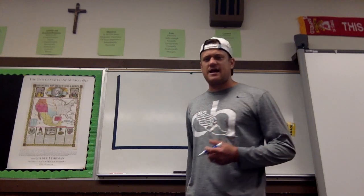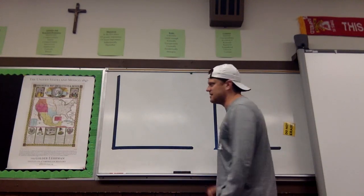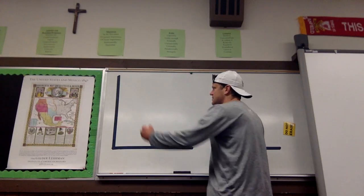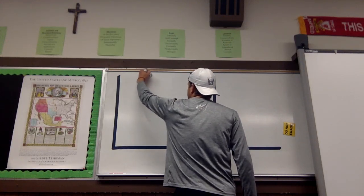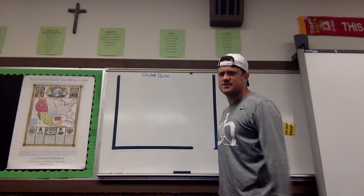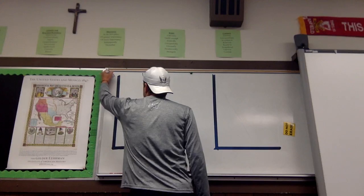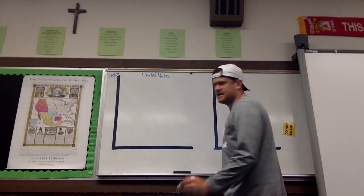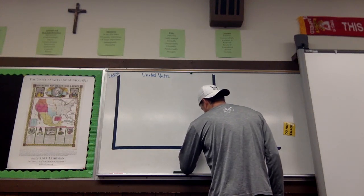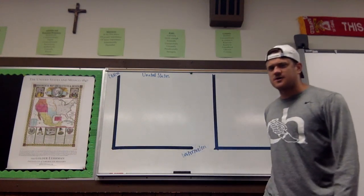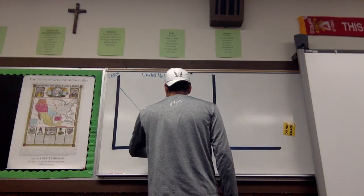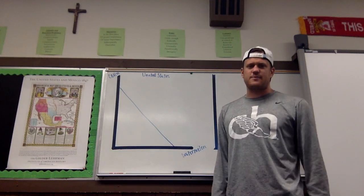The setup for a production possibility frontier is pretty simple. You need a one-quadrant graph with a y and x-axis. You need a country — we'll say the United States — and we'll say the United States is producing corn and watermelon. So two products. It doesn't really matter what the products are as long as you have two. And you need a negatively sloped curve or line, which is essentially the production possibility frontier.